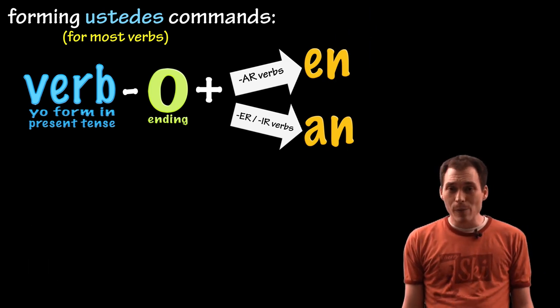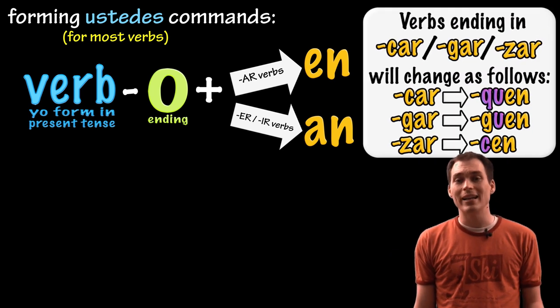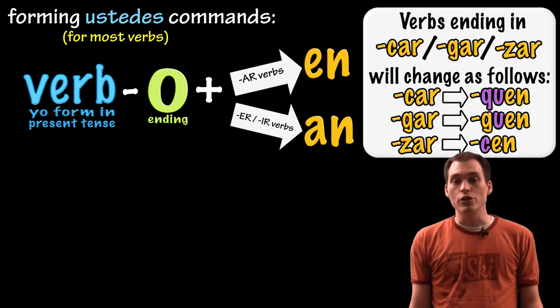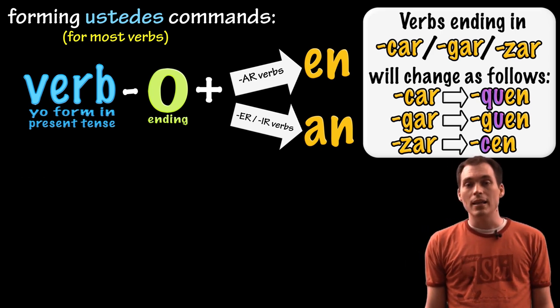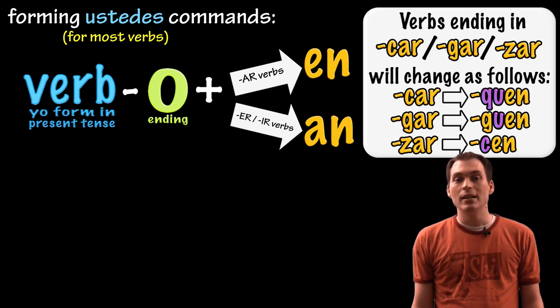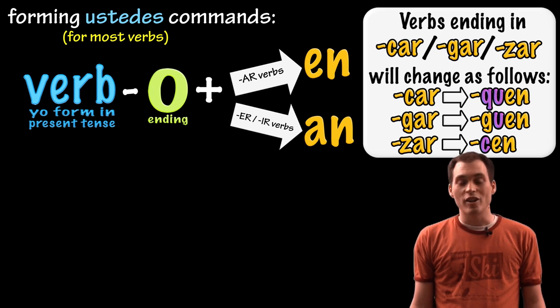Now there are a couple things that I want to point out to you. Notice that if they are AR verbs that end in CAR, GAR, and ZAR, they will have a spelling change, so CAR will change to QUEN to preserve the K sound, GAR verbs will end in GUEN to preserve that G sound, and ZAR verbs will end in CEN, just because.